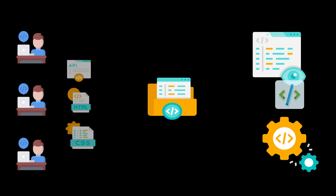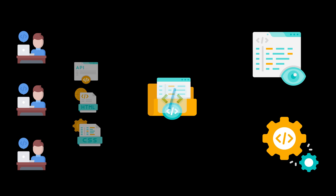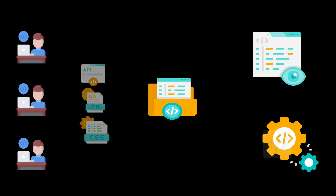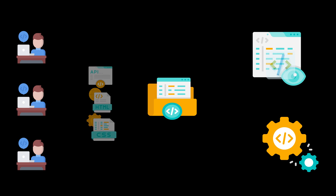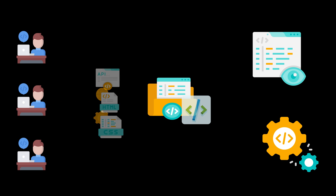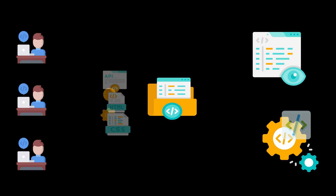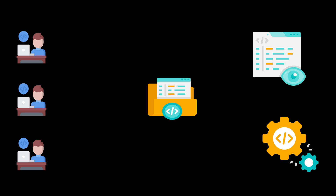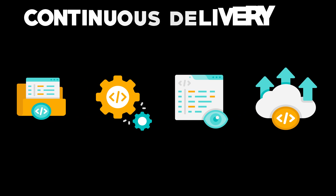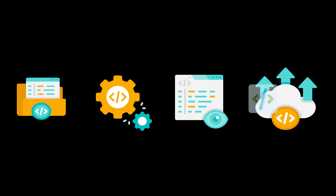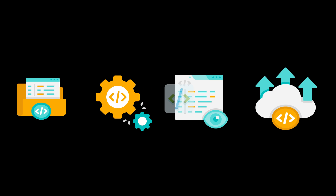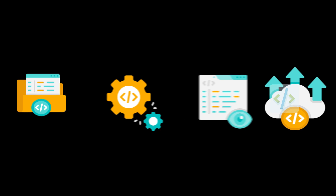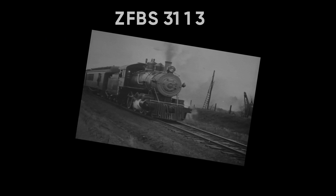Continuous delivery extends CI by adding an automated deployment step to the workflow. While 20 years ago — which is like a thousand years in tech — software was released every three to six months at best, it's now common for today's internet giants like Netflix to deploy several hundred times a day to production.